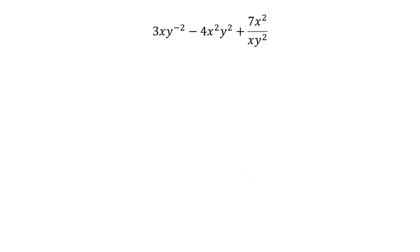Let's walk through this one. So what I have is 3xy^-2 minus 4x^2y^2 plus 7x^2 over xy^2. Step one, make it flat.